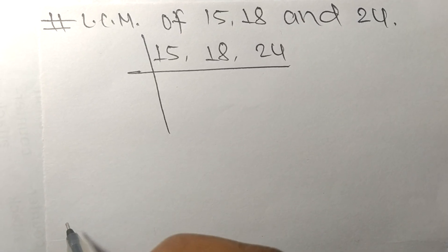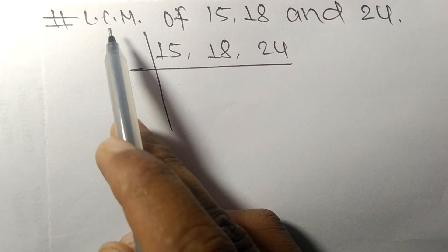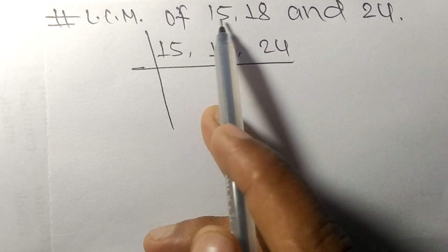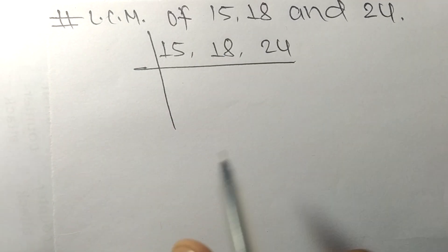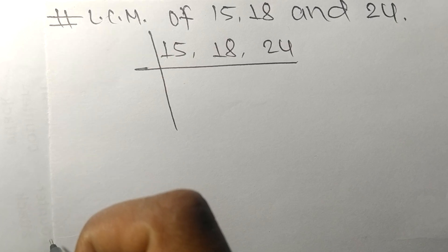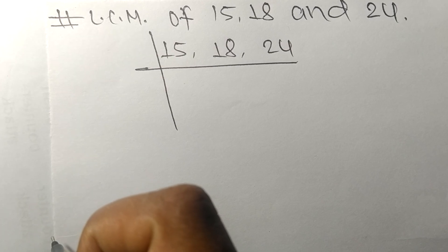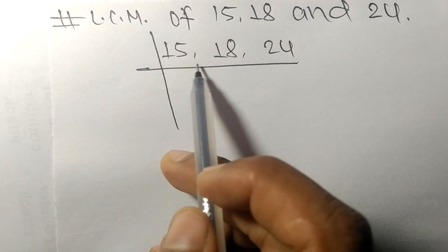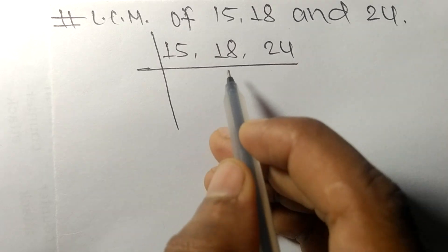So today in this video we shall learn to find the LCM of 15, 18, and 24. To find LCM, we have to choose the lowest number that can exactly divide at least any two of these numbers.